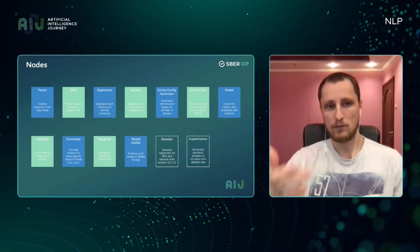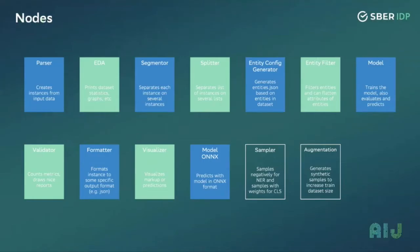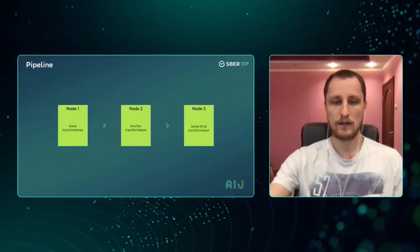With more than 50 NER projects in the pipeline across around 15 teams, this means too much time to launch tasks into the business. That's why we developed a parser that reads data and brings it into one format, performs dataset analysis with statistics and graphics, splits documents into parts, handles configuration and filtration of entities, validates models with metrics and reports, and visualizes markup and predictions. We also have boxes for deployment, negative sampling, and data augmentation.